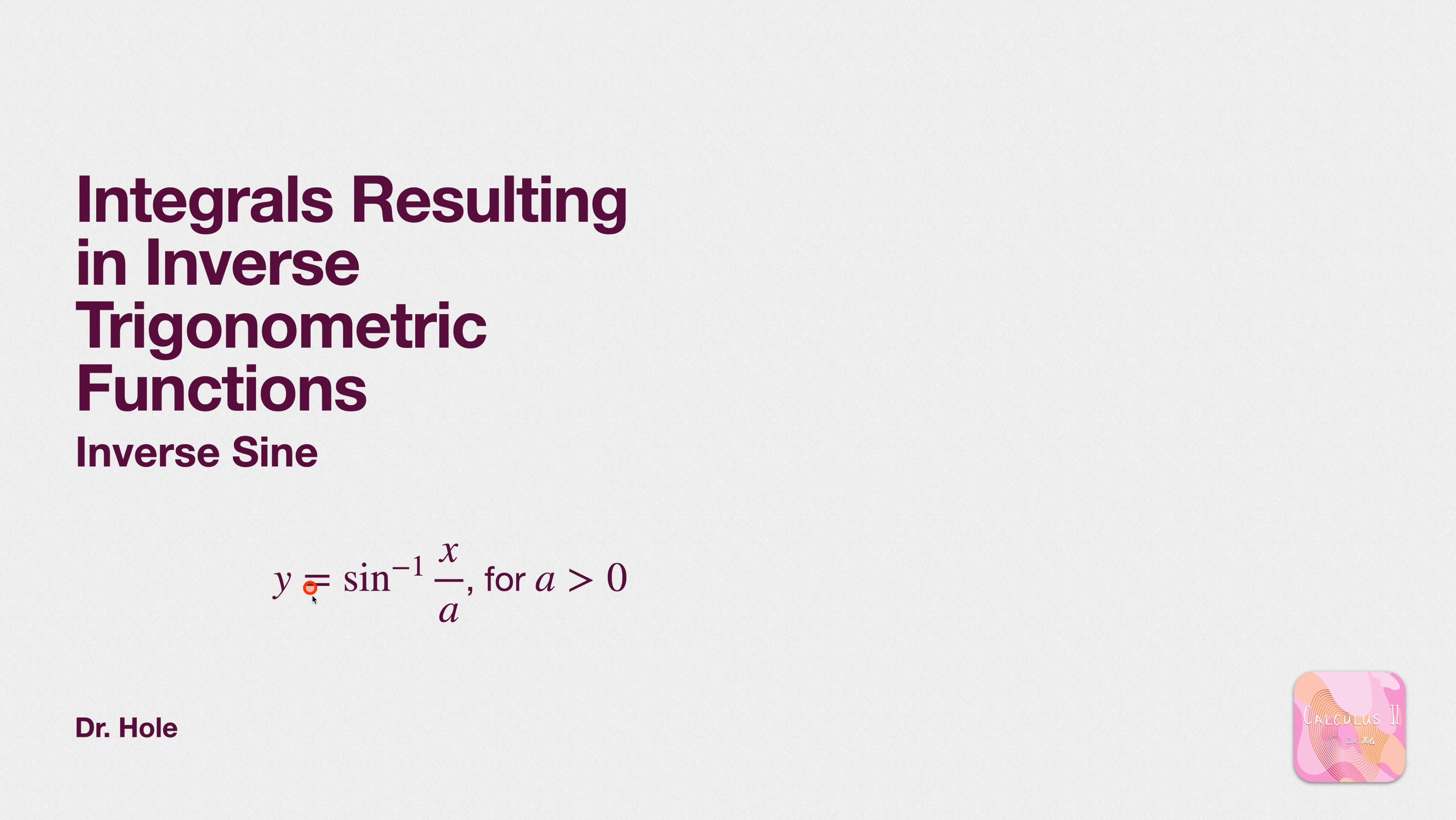So let's collect that together. So if we have a function y set equal to arcsine of x over a, we know how its derivative will look. And then rephrasing that in terms of integrals, we know that the integral of this radical function is arcsine of x over a plus any constant. We'll do an example next.